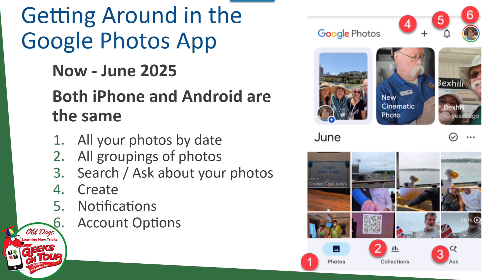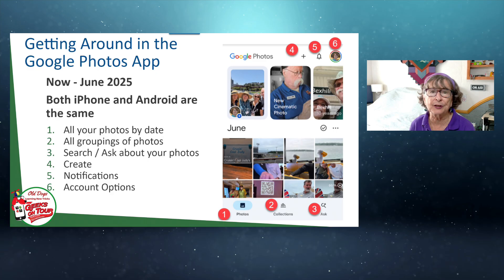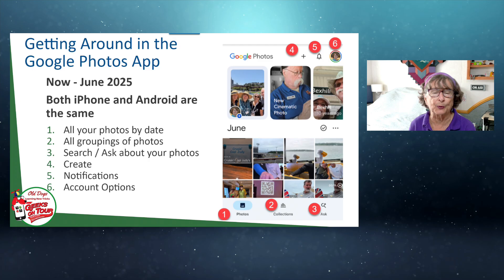There are six buttons you need to know about. One is the Photos button, where all your photos are. Two is Collections. Three is Ask and Search. Four is the Create button. Five is Notifications, and six is your Account button. For getting around and looking at all your photos, it's really just one, two, and three that you need to be familiar with.